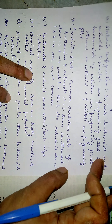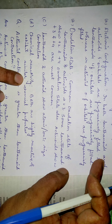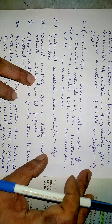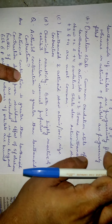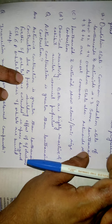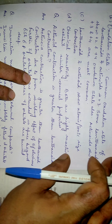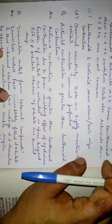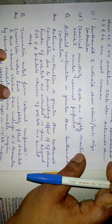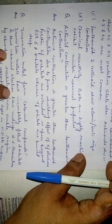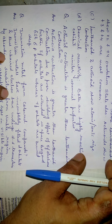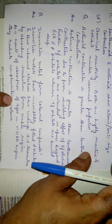The common oxidation state of both lanthanoids and actinoids is +3. Some lanthanoids also show +2 and +4 oxidation states, while actinoids most commonly show +3 and +4. Both series show atomic and ionic size contraction and are highly reactive with similar chemical properties. Actinoid contraction is greater than lanthanoid contraction due to the poor shielding effect of 5f electrons. Additionally, 5f orbitals are extended in space beyond 6s and 6p orbitals, whereas 4f orbitals are buried deep inside the atom.